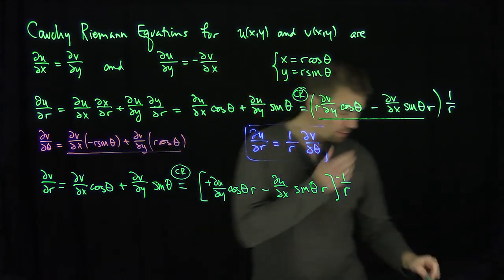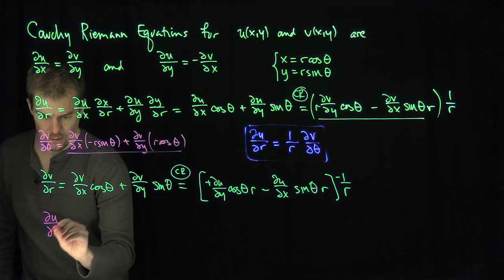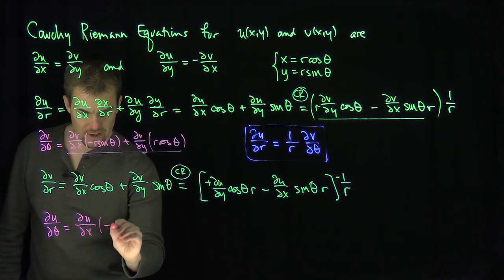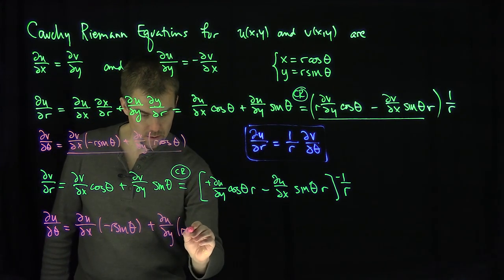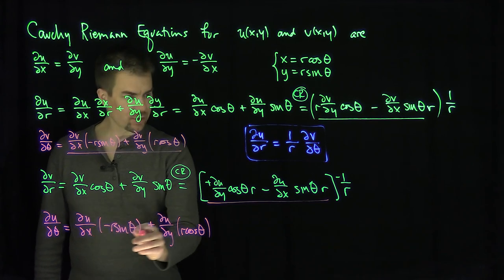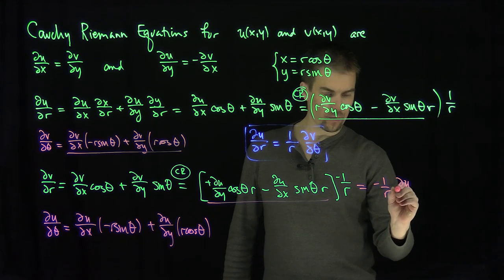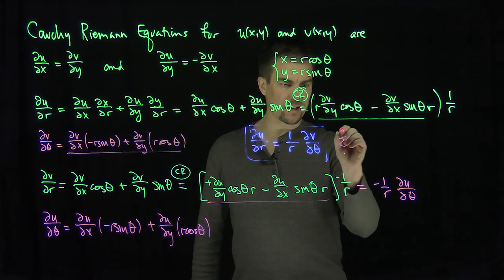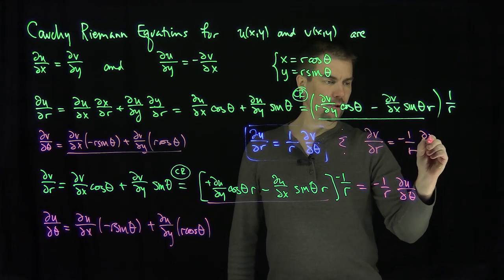Now let's look at what partial u partial theta is. Partial u partial theta equals partial u partial x times (negative r sine theta) plus partial u partial y times (r cosine theta). Comparing, we see that our expression equals negative 1 over r times partial u partial theta. So our second Cauchy-Riemann equation is: partial v partial r equals negative 1 over r times partial u partial theta.